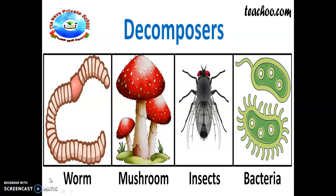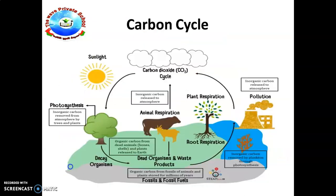Decomposers are extremely important because they help release substances from dead organisms so that they can be used again by living things, playing a key role in the nutrient cycle. Two important substances involved in decomposition are carbon and nitrogen. Today we are going to see the carbon cycle.